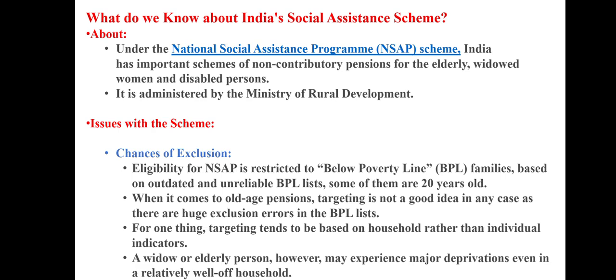Regarding India's Social Assistance Schemes, under the National Social Assistance Program (NSAP), India has important schemes providing non-contributory pensions for the elderly, widows, and disabled persons, administered by the Ministry of Rural Development. However, there are issues: the eligibility is restricted to Below Poverty Line (BPL) households, using an outdated and unreliable BPL list that is about 20 years old. Because targeting is based on household rather than individual indicators, widows and elderly persons facing deprivation even in relatively well-off households are excluded.